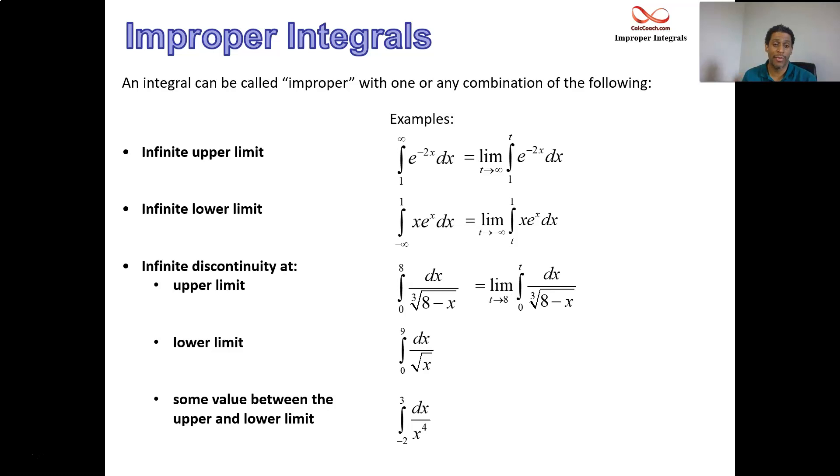From 0 to 9, you'll be approaching 0 from the right-hand side. So technically those are one-sided limits there.